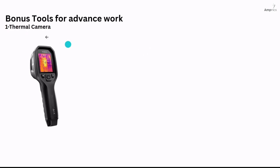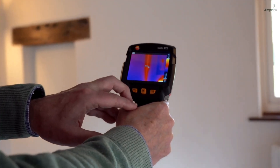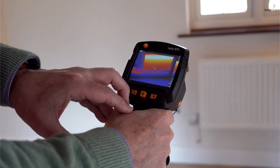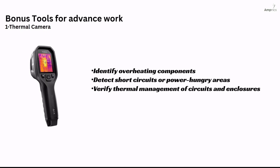Bonus tools for advanced work. Number one: Thermal Camera. A thermal camera is an imaging device that detects infrared heat radiation and displays temperature differences as a color-coded thermal image. Hardware engineers use it for identifying overheating components, detecting short circuits or power-hungry areas, and verifying thermal management of circuits and enclosures.